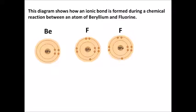What we care about are the electrically charged particles — the negatively charged electrons and the positively charged protons. When a beryllium atom gets near a fluorine atom, the fluorine atom needs one valence electron to make a stable octet of eight, so it's going to steal that from the beryllium atom. That fluorine atom gains a negative charge because it gained one extra electron.